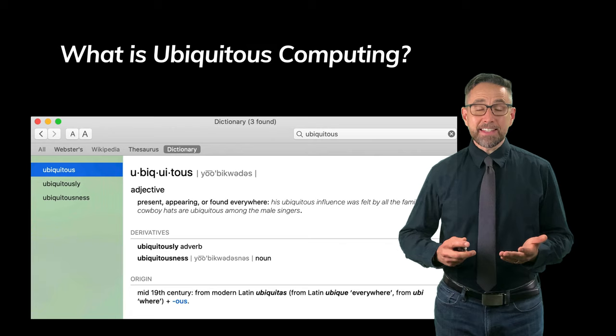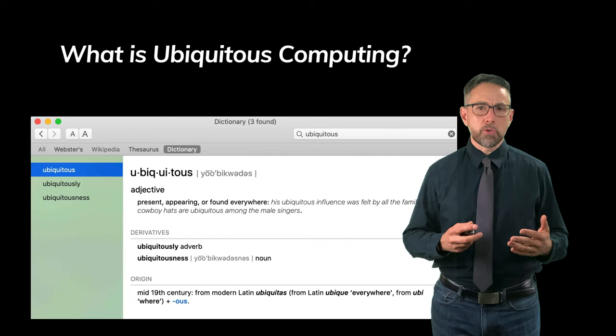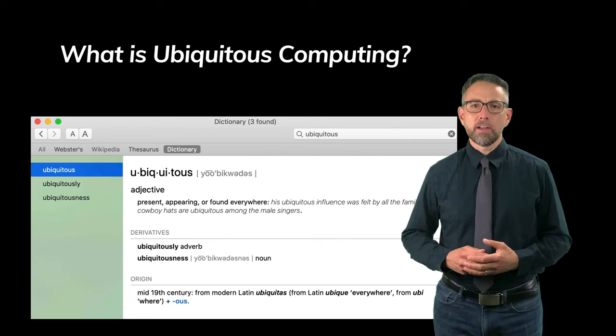In one sense then, when we talk about ubiquitous computing what we mean is we mean a world in which computers are all around us. They're part of our daily routine, we use them when we're doing work and when we're doing leisure, we use them to get places and we use them when we are still at home and at work, all the different places where we are.